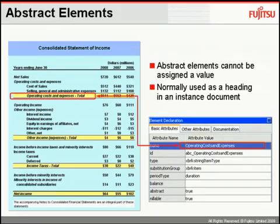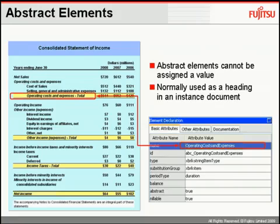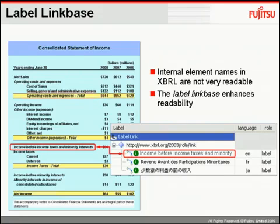The period type will be discussed further when we look at XBRL context in the instance document. In this example, operating costs and expenses is simply a heading in the income statement — it's not an actual value. So what we do is create it as what we term an abstract value in the taxonomy.